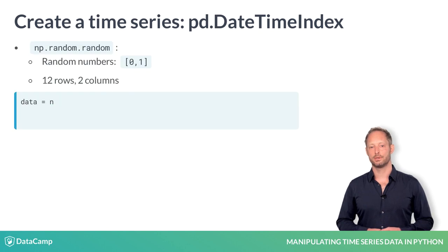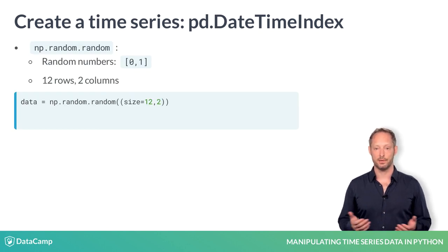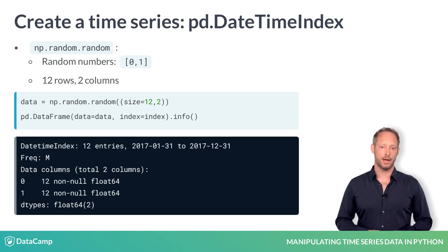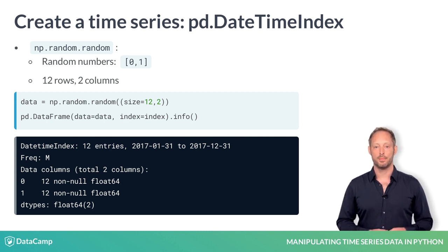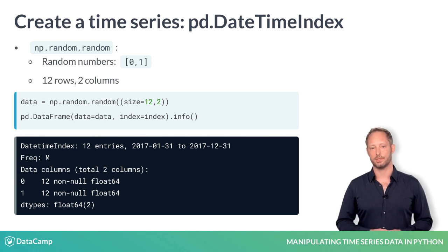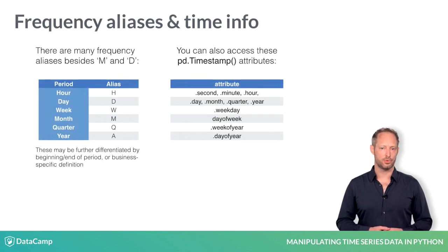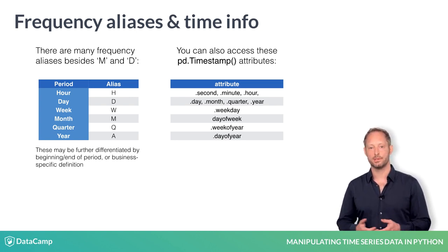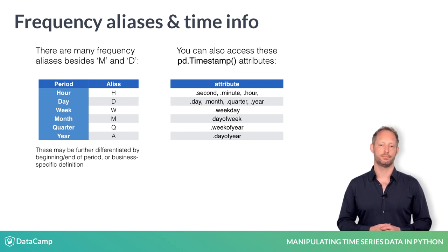Let's create 12 rows with two columns of random data to match the DatetimeIndex. Provide the dates to the DataFrame constructor and you have created your first time series with 12 monthly timestamps. Pandas allows you to create and convert between many different frequencies. Here are the most important ones. Some may also be set to the beginning or end of the period, or use business instead of calendar periods. There are also numerous timestamp attributes.